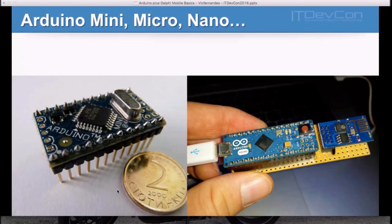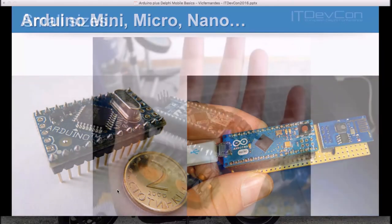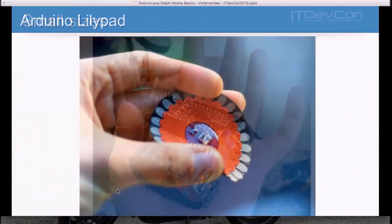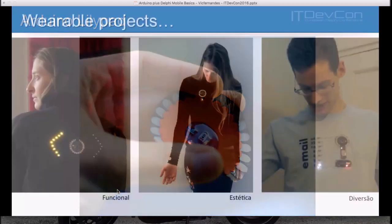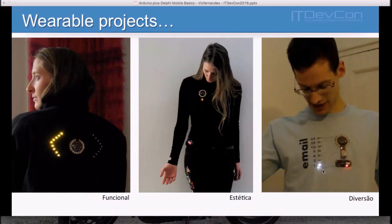Starting with Arduino Uno, it's not a very small board. You can then go for Arduino Mini, Micro, or Nano, which have the very same software support. The same code you write for Arduino Uno works on smaller boards with just some variance in pin count. Then there's the Arduino LilyPad for wearable projects — you can do amazing things like a t-shirt that shows how many unread emails you have, or more functional applications.